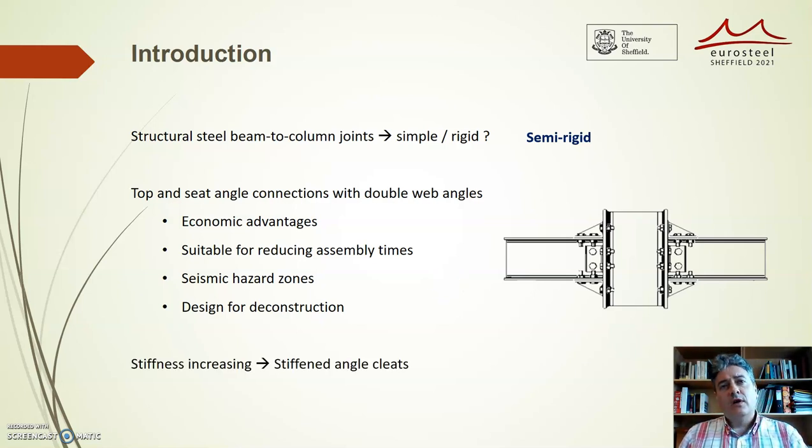The stiffness of top and seat angle connections can be increased by means of bolt preloading or by stiffening the angled cleats. In case of significant stresses in the panel, it is common in practice to use welded stiffeners to protect the column.